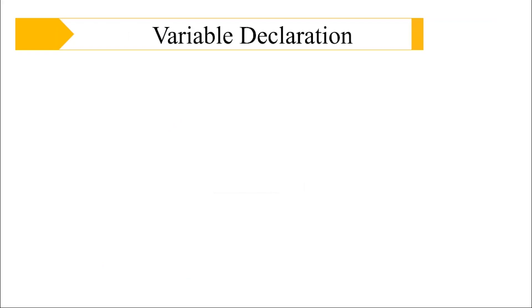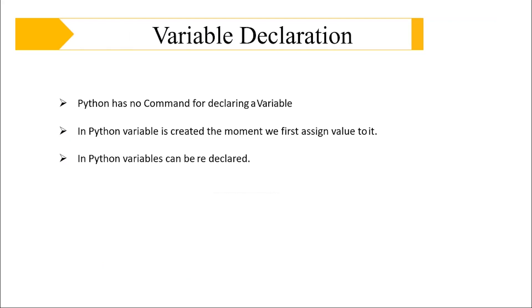Python actually has no command for declaring a variable. In Python, a variable is created the moment we first assign value to it. As soon as I write A equals 100, a variable A is created holding the value 100. We don't have to explicitly write the data type — we don't have to say int A equals 100 followed by semicolon. That is why we say there is no declaration; a variable is created the moment we first assign value to it.